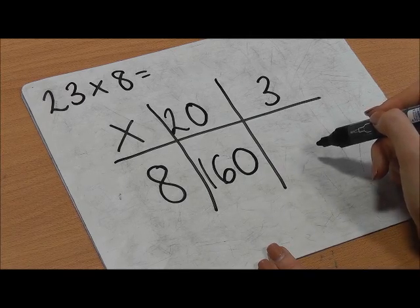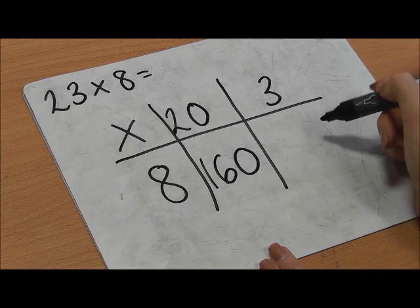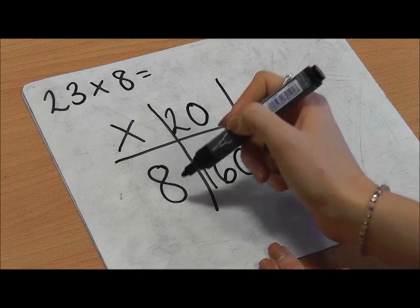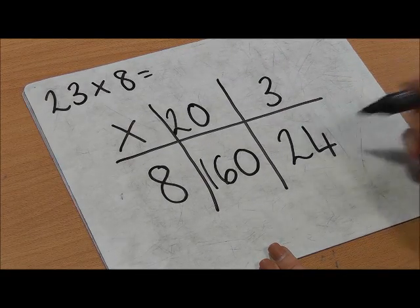Now, we need to calculate 3 times 8. 3 times 8 equals 24.